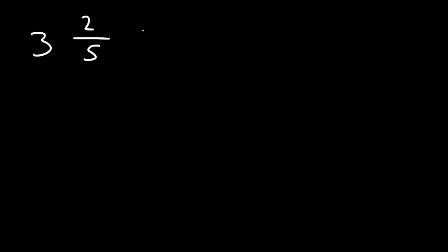A mixed number is the sum of a whole number and a fraction. For instance, three and two-fifths is simply the sum of three plus two-fifths.